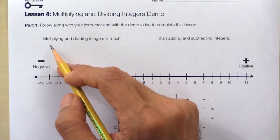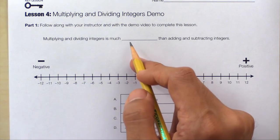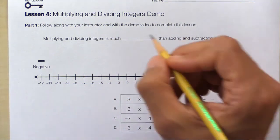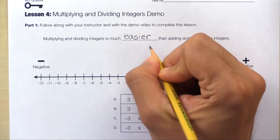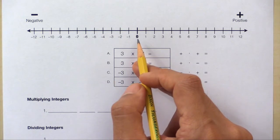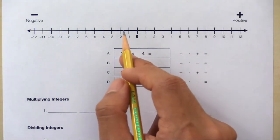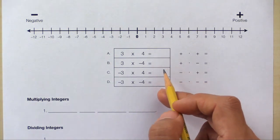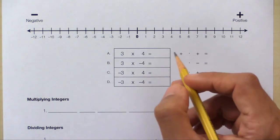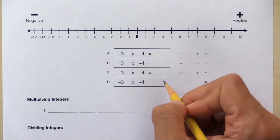Lesson four: multiplying and dividing integers demo. Take a look at the statement in part one — multiplying and dividing integers is much easier than adding and subtracting integers. Now look at the number line and chart. Here we have our number line with both positive and negative numbers, and these are the problems we'll work on during the demo. Be sure to write the answers as we complete the demo.